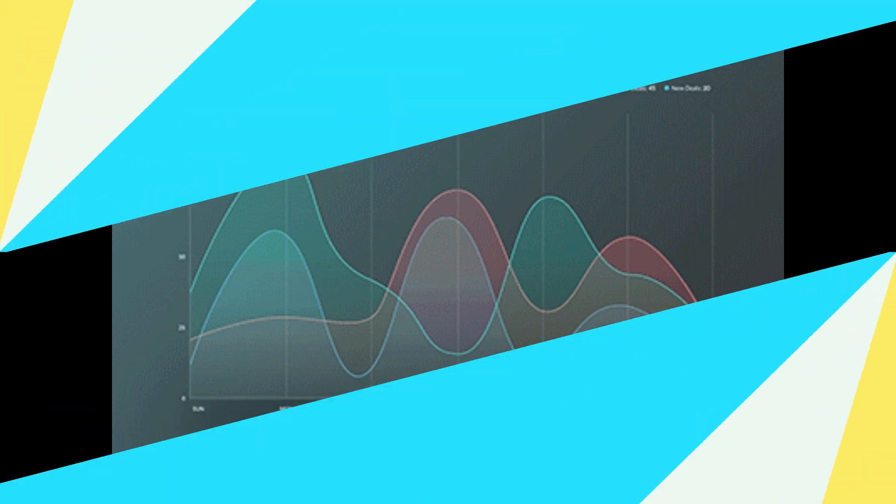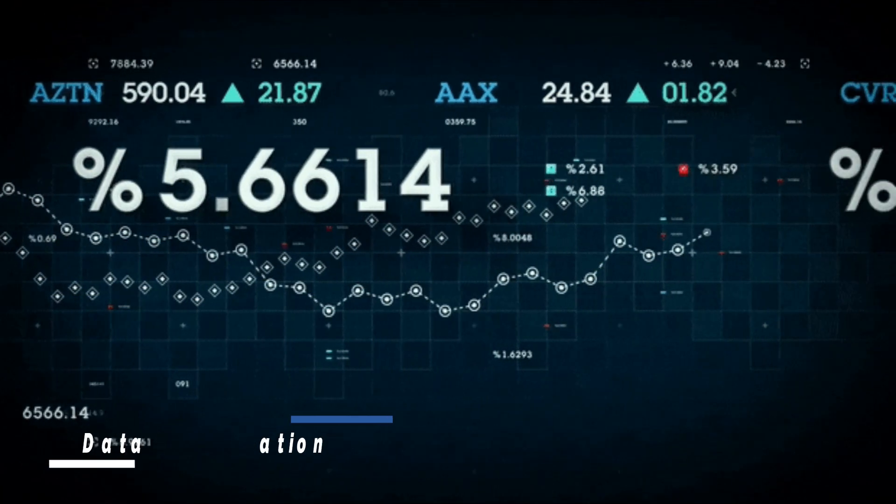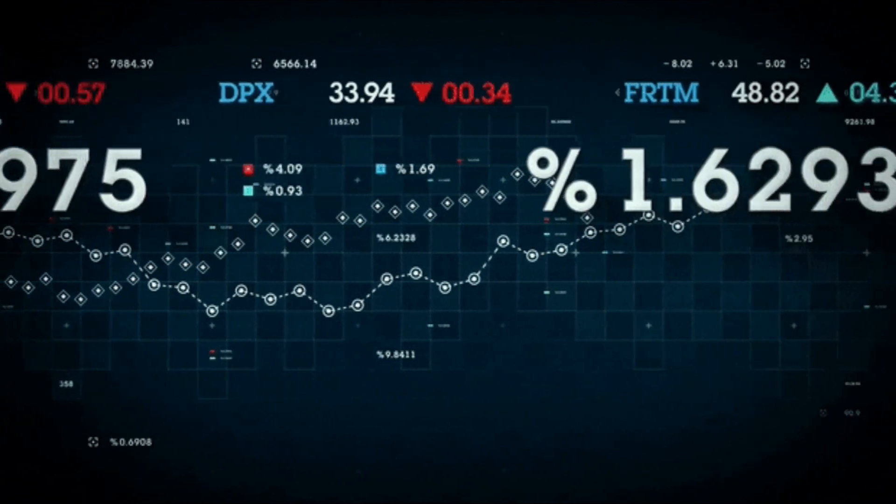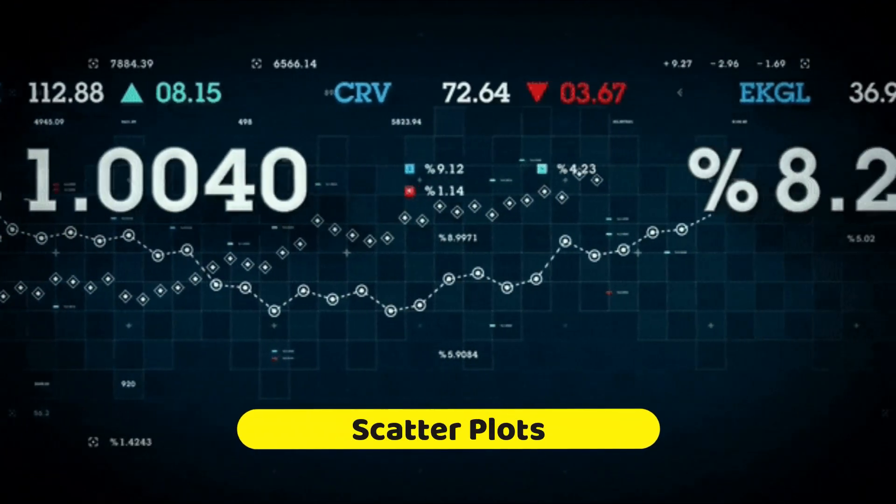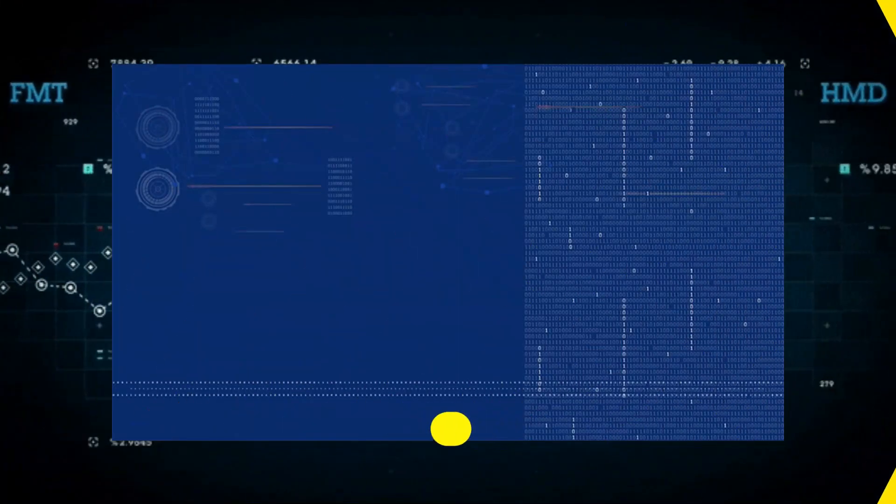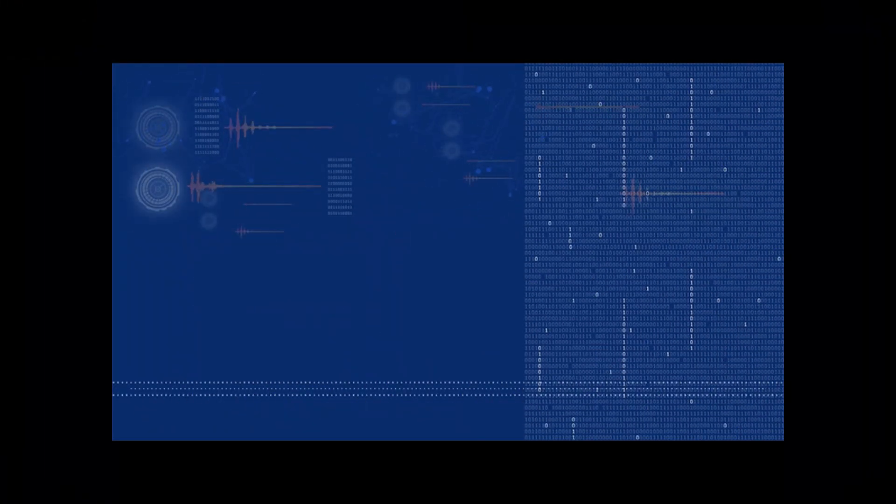Step 3: Data visualization. Visualize the data using different types of plots like line plots, scatter plots, histograms, etc. This helps to identify the trend and seasonality in the data.